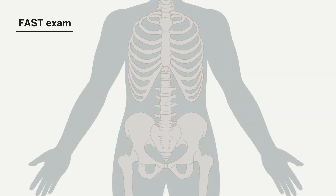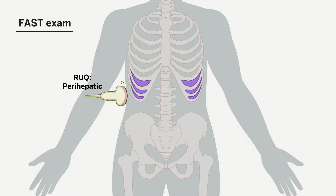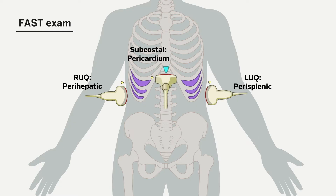Moving on to performing the FAST exam, this is performed by examining four areas for the presence of free fluid: the right upper quadrant for fluid in the peri-hepatic space, left upper quadrant for fluid in the perisplenic space, subcostal area for pericardial fluid, and finally the pelvic area for suprapubic fluid. We will now go through each of these views and discuss how each view is obtained and look at some sonoanatomy.